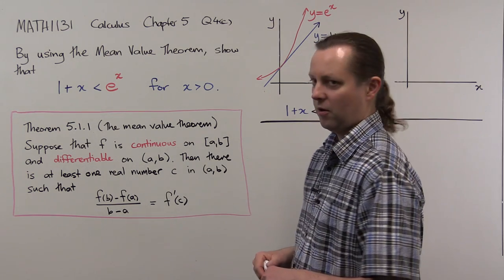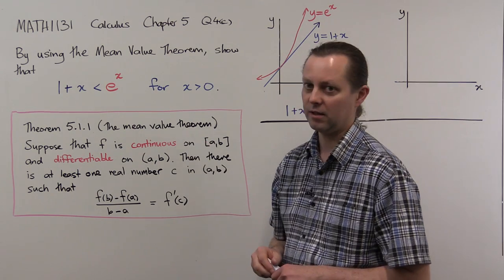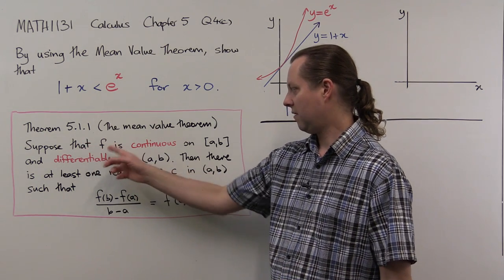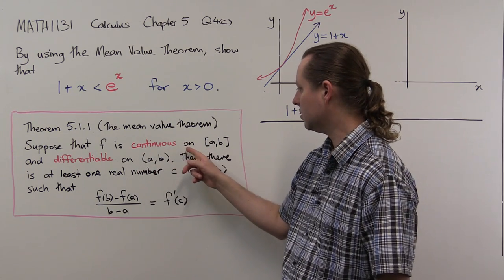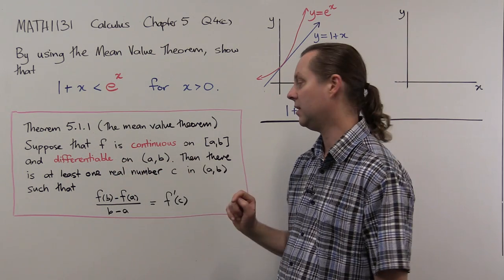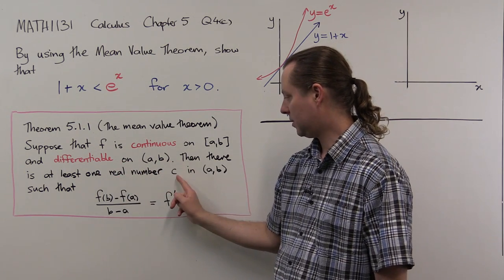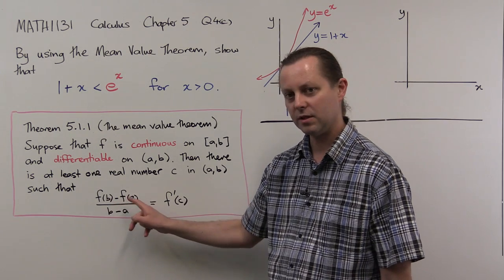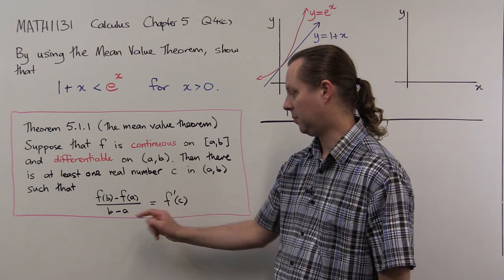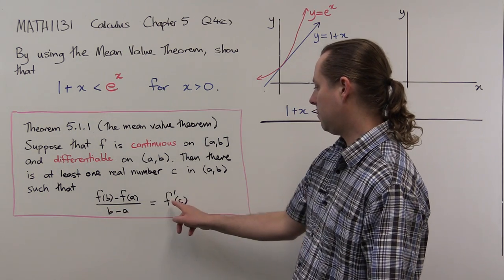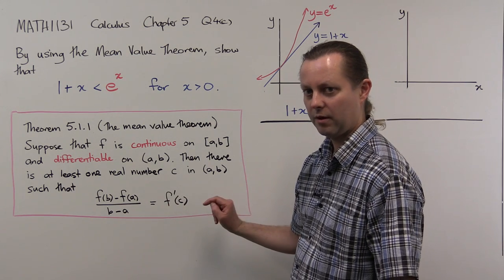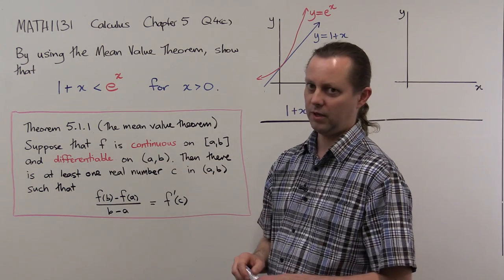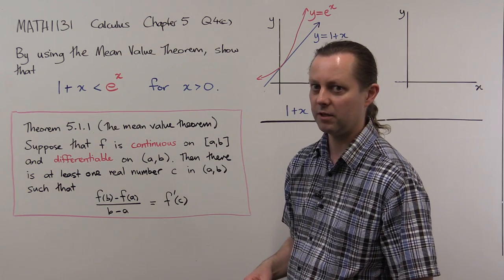Before we start we better know what the mean value theorem is. It's theorem 5.11 in the notes. It states that suppose f is continuous on the closed interval [a,b] and differentiable on the open interval (a,b), then there is at least one real number c in the open interval (a,b) such that the slope of the chord joining the points at a and b on the graph of f is equal to the slope of the tangent line at some point c between a and b. Continuous and differentiable are highlighted in red because this theorem is only about differentiable functions.